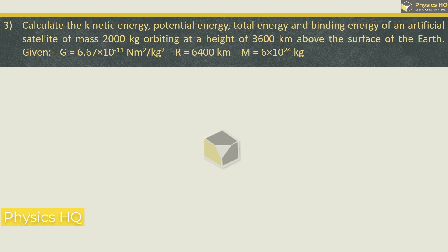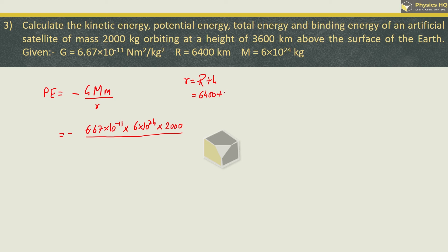Let us go ahead with the next sum. Calculate the kinetic energy, potential energy, total energy, and binding energy of an artificial satellite of mass 2000 kg orbiting at a height of 3600 km above the surface of the Earth. So first of all we will find the potential energy. Potential energy formula is minus G into capital M small m divided by R. Capital G is 6.67 into 10^-11, mass of Earth is 6 into 10^24, small m is 2000 divided by small r which is capital R plus H. Capital R is radius of Earth which is 6400 plus height at which the satellite is orbiting is 3600.